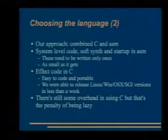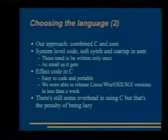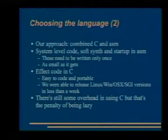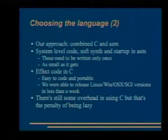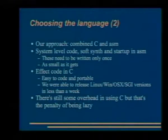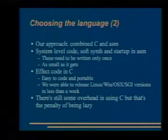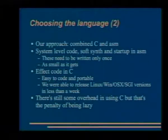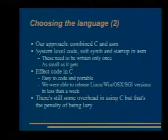This is our approach: system-level code, soft synthesizer, and startup — things you need to write only once — those are made in assembly, and then the rest is C. All the effects and whatever there is. This has proven to be quite a good approach. We have the framework written in assembly — the startup, soft synth, and such. We have only one C file that we edit each year and then just recompile. There's not a lot of rewriting involved — we just change the contents of the functions.